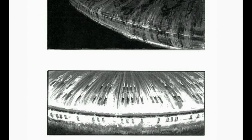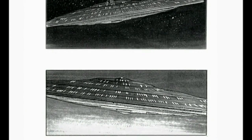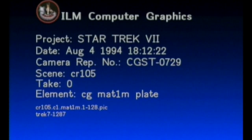To create the crash sequence, we mounted the saucer section of the Enterprise on a motion control model mover and filmed it in several passes with a motion control camera crane. The first pass is a matte pass. The ship is evenly lit so that all of its edges show clearly against a blue screen. The blue screen will eventually be removed and replaced with a background.